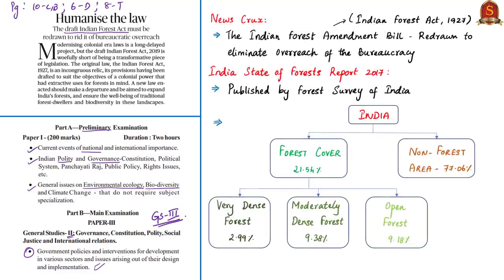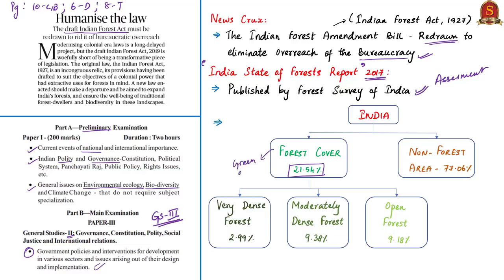The author states that the Draft Indian Forest Amendment Bill must be redrawn to eliminate the overreach of bureaucratic and forest authorities. The Forest Survey of India, under the Ministry of Environment, Forest and Climate Change, published the India State of Forest Report 2017. It found that total forest cover adds to 21.54% of India's geographical area: 2.99% is very dense forest, 9.38% is moderately dense, and 9.18% is open forest. Almost 77% of the total geographic area is classified as non-forest area.